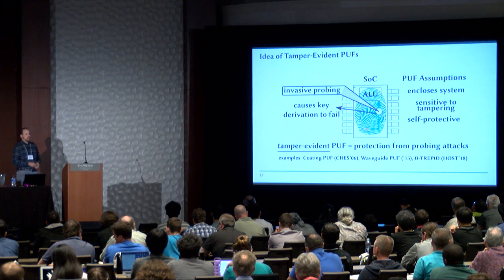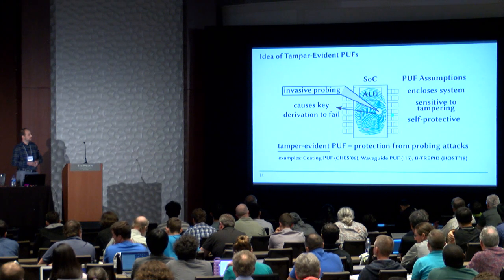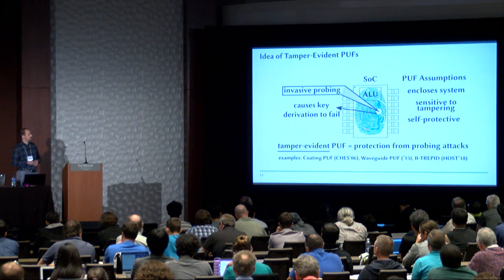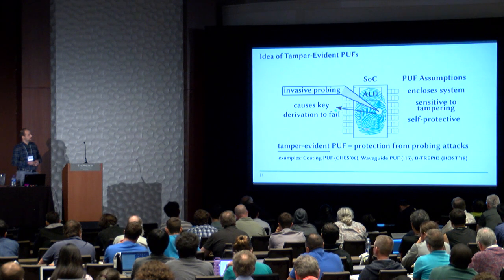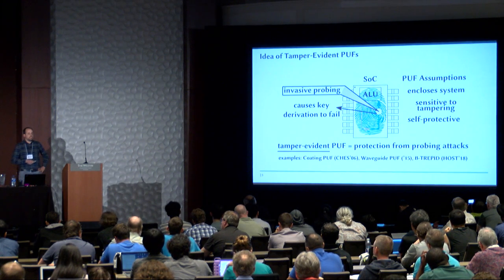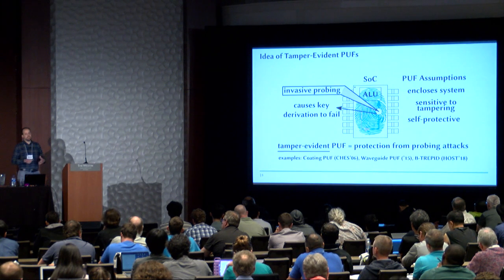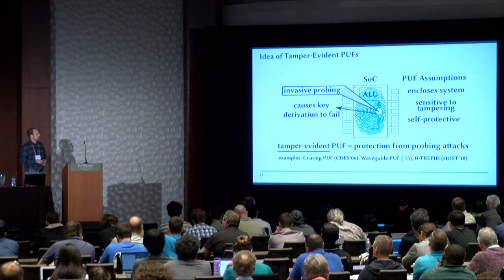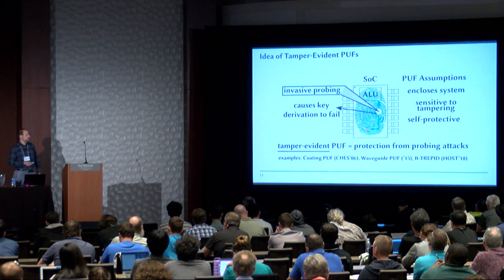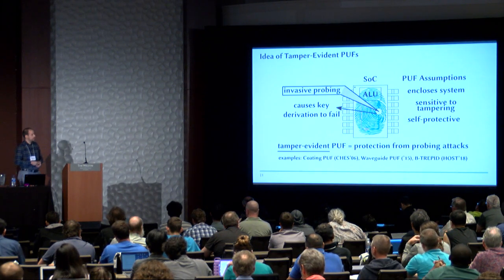What's the idea of a tamper-evident PUF? Instead of making the PUF as small as possible, we now make it as big as possible and make it cover everything. When we do the probing, we destroy parts of the PUF, and this causes the key derivation to fail. The underlying assumptions are that the PUF somehow encloses the system, is sensitive to tampering, and needs to protect itself. This is called a tamper-evident PUF, and there are not too many examples — one was presented at CHESS 2006.